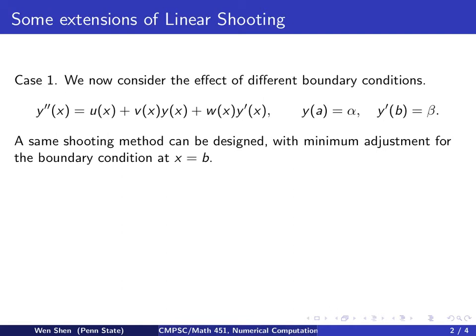Well, think about the way we designed the shooting method for the standard one, where this is yb equals to beta. We see that we can simply adopt a very similar one, and the only adjustment we need to make is that now we have a different boundary condition at b.